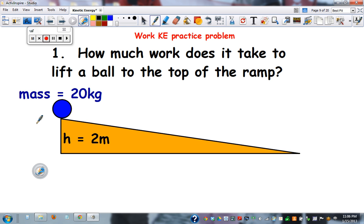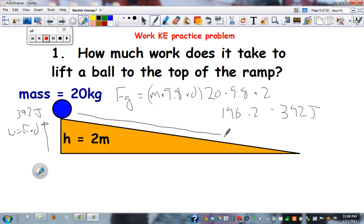Here's the answer. Work equals force times distance. We don't know the force, but we do know that we're working against gravity, which is mass times 9.8. So 20 times 9.8 times a distance of 2 meters, which is 196 times 2 is 392 joules. So if you do that much work to lift it,